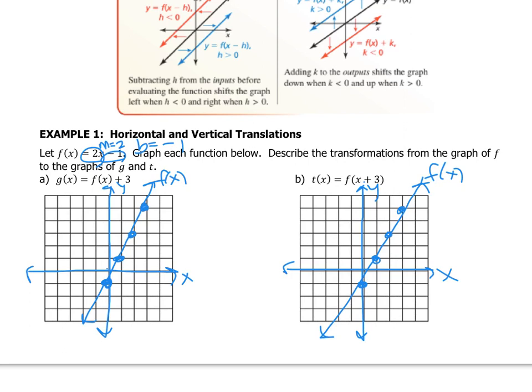Now that we're talking about function notation — because we have f, g, and t — I can just write f of x without writing the full equation representing the line. That's something nice about function notation: you can use that abbreviation as long as the letters are different.